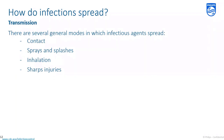To cause infection, the infectious agent needs to be transmitted to the susceptible person. General modes of transmission include contact, sprays and splashes, inhalation, and sharps injuries. Preventing or controlling the spread of infectious agents through these common modes of transmission requires different levels of precaution, depending on the infection of concern and patient or environmental factors.